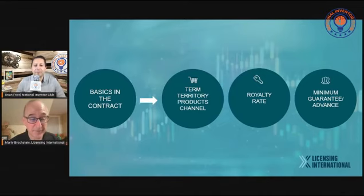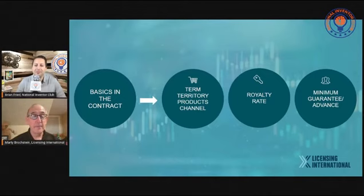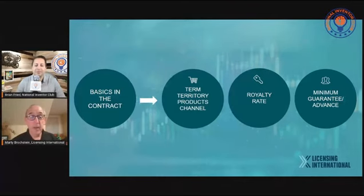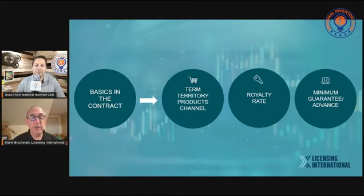Now we get into the basics of the business — plain vanilla. The things that you want in the contract, the basics, are the term: the amount of time that the license is for. You're not going to have a Star Wars license in perpetuity. There will generally be, for something like Star Wars, a two-year, maybe a three-year license.